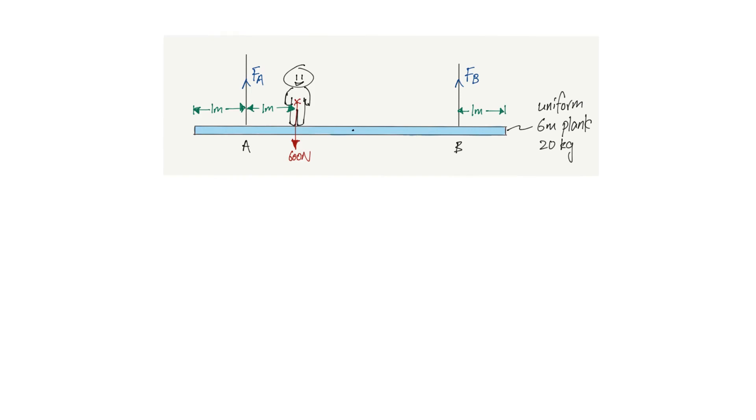In this question, you are required to find the two unknown tensions in the string FA and FB. Now before we solve this question, let's go through some basic concepts. This is a uniform plank, 6 meter and it is 20 kg. Because it's uniform, the CG will be exactly at the center. That means it's 3 meter away from both ends. So you are required to draw the weight on your own, you will draw the weight from the CG and this will be 200 N.